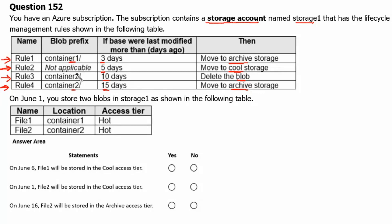Note that on container 2, after 10 days the blob will be deleted anyway, so rule 4 will never trigger — only rule 3 applies. On June 1st, you store two blobs in Storage 1: file 1 goes to container 1 in the hot access tier, and file 2 goes to container 2 in the hot access tier.